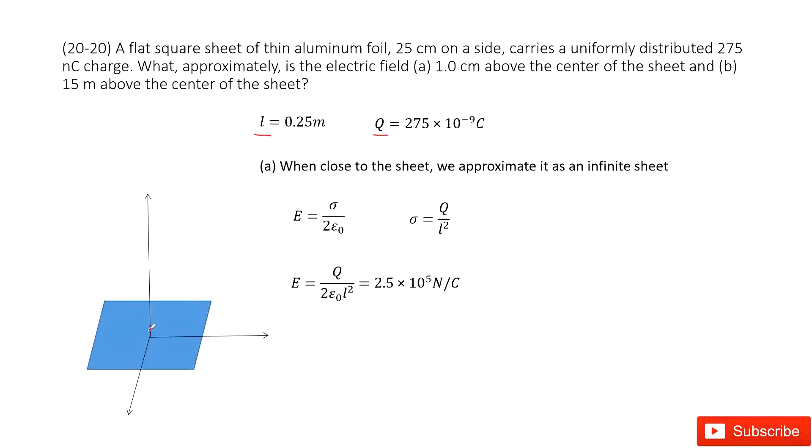So the first one is there. If this R is very small, just 1 centimeter, that means it is super close to this square sheet. So we can consider this is just the region close to an infinity square sheet.